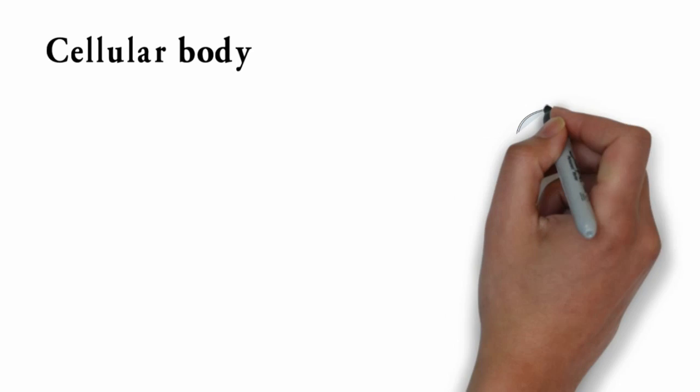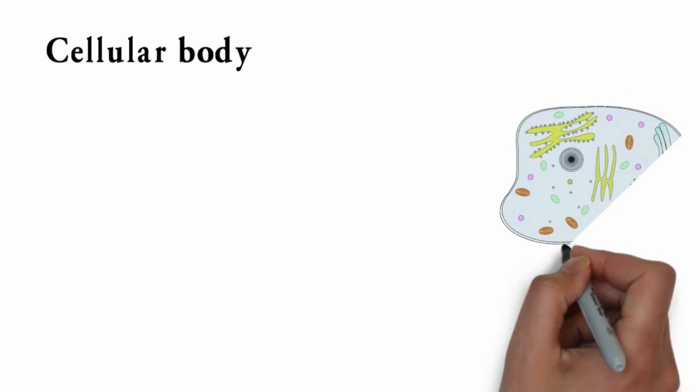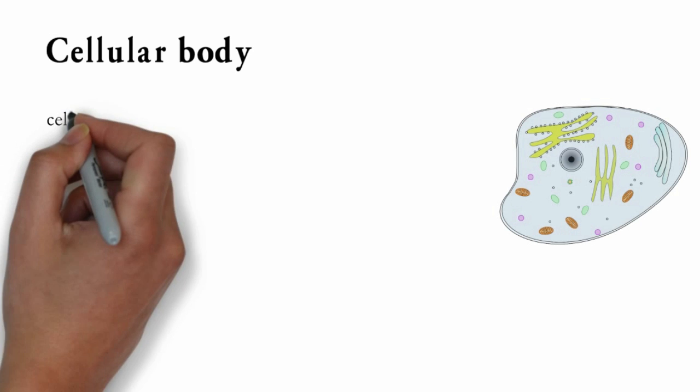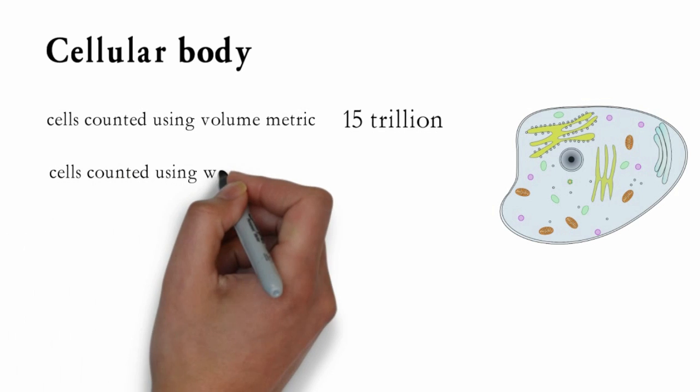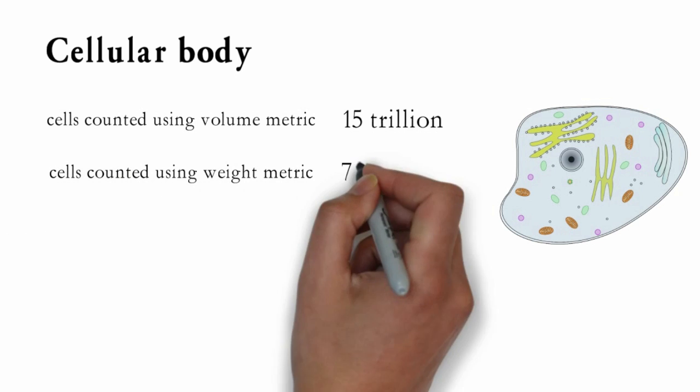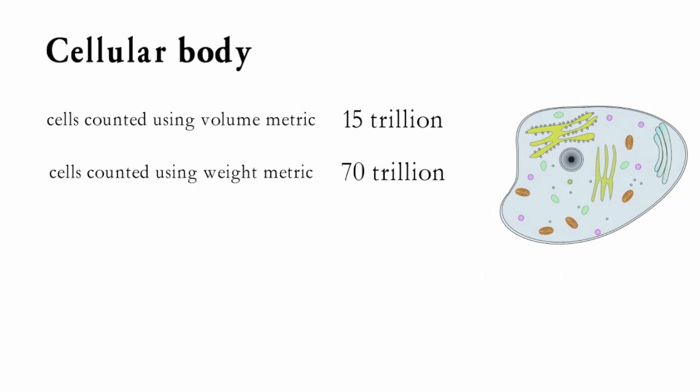Cellular body. Until recently there had been varying estimates about the number of cells in human body. The count varies due to measuring metric used. If counted using volume metric, it gives an estimate of about 15 trillion cells. Whereas, if counted using weight metric it provides an estimate of about 70 trillion cells. However, if density metric is used the number is astounding 724 trillion cells.